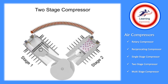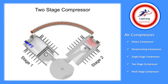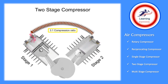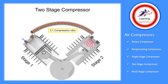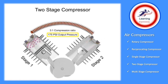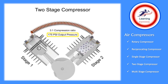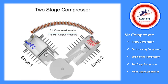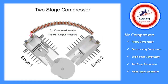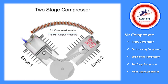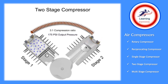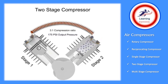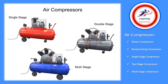Two-stage compressors have a compression range of 3 to 1 or even less per stage, but can operate up to 175 psi. They can also deliver more air at a higher pressure than single-stage compressors of the same horsepower. If pressures of more than about 175 psi are needed, multi-stage compressors should be used.